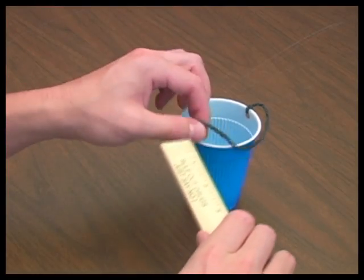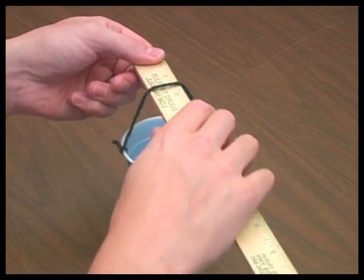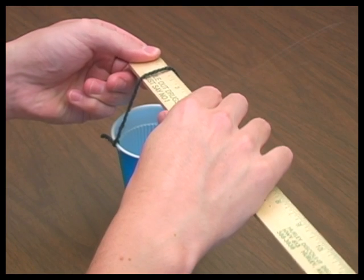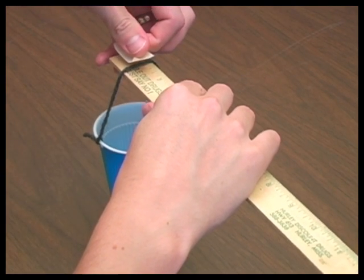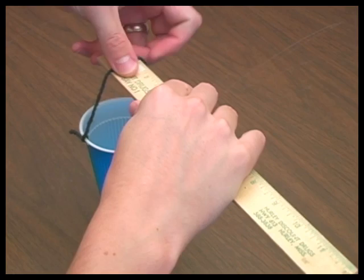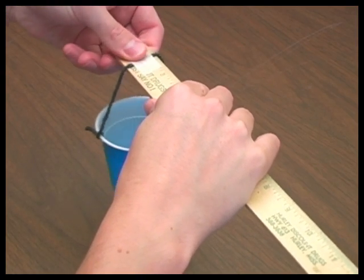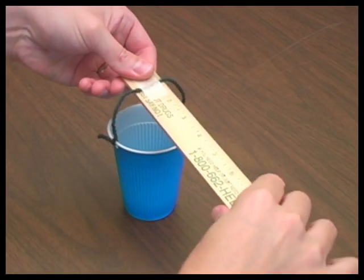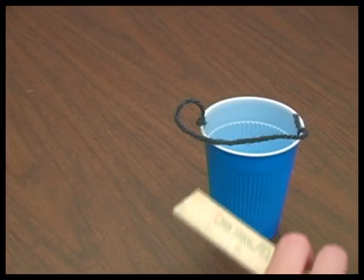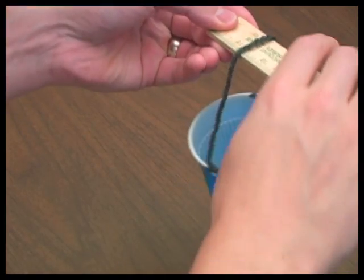Take one cup and slide its attached string over one end of the ruler. Move the string to the 1-inch or 11-inch mark, depending on which side you place the cup, and tape it to the ruler. Repeat these steps for the second cup on the other end of the ruler.